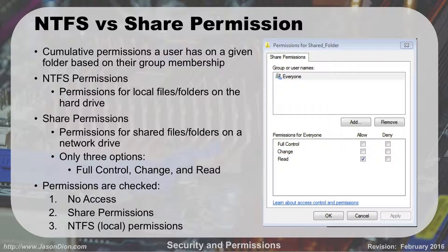You basically check them, and a user will get either no access, share permissions, or their NTFS local permissions. When looking at a file, the first thing checked is any deny — if it's a deny, it denies access. The second thing checked is the share permissions; if there's an allow and no prior deny, that gets checked. The third is the local NTFS permissions on the hard drive. So the big idea is: NTFS is your local permissions, and share drive permissions are over the network.